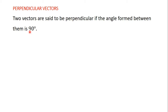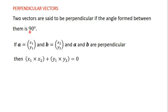How do you know if two vectors given to you are perpendicular? If vector a is (x1, y1) and vector b is (x2, y2), and vector a and vector b are perpendicular, then x1 times x2 plus y1 times y2 is equal to 0. So if two vectors are perpendicular, if you multiply the x components and add it to what you get when you multiply the y components, you should get 0.